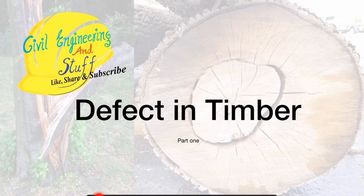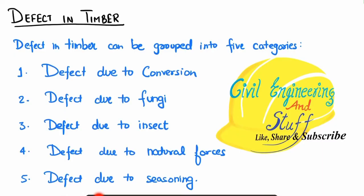Hello everyone, welcome to Civilization and Stuff. In today's lecture we are going to discuss defects in timber. Defects in timber can basically be characterized into five different categories based upon the mode of the defects: defect due to conversion, defect due to fungus, defect due to insect, defect due to natural forces, and defect due to seasoning. In today's video lecture we are going to discuss defect due to conversion, defect due to fungus, and defect due to insect. Natural forces and seasoning we will discuss in the upcoming lectures.